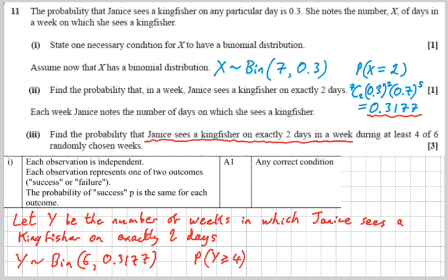So the probability that Y is greater than or equal to four is the same as one minus the probability that Y is less than or equal to three. And that allows us to use the cumulative function on our calculator to find the probability of everything up to and including three. And then take that away from one, and we get our answer of 0.0854.